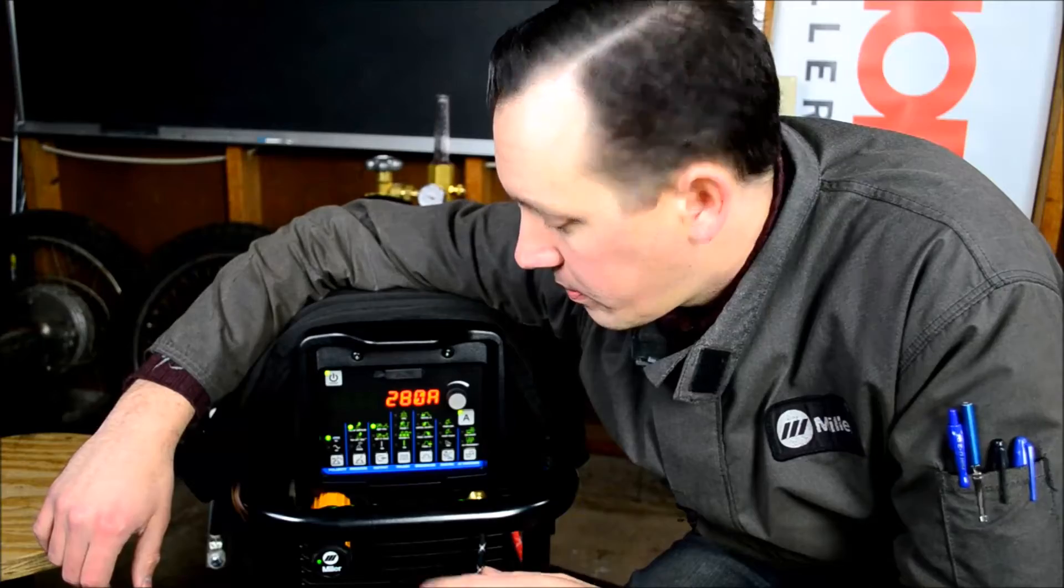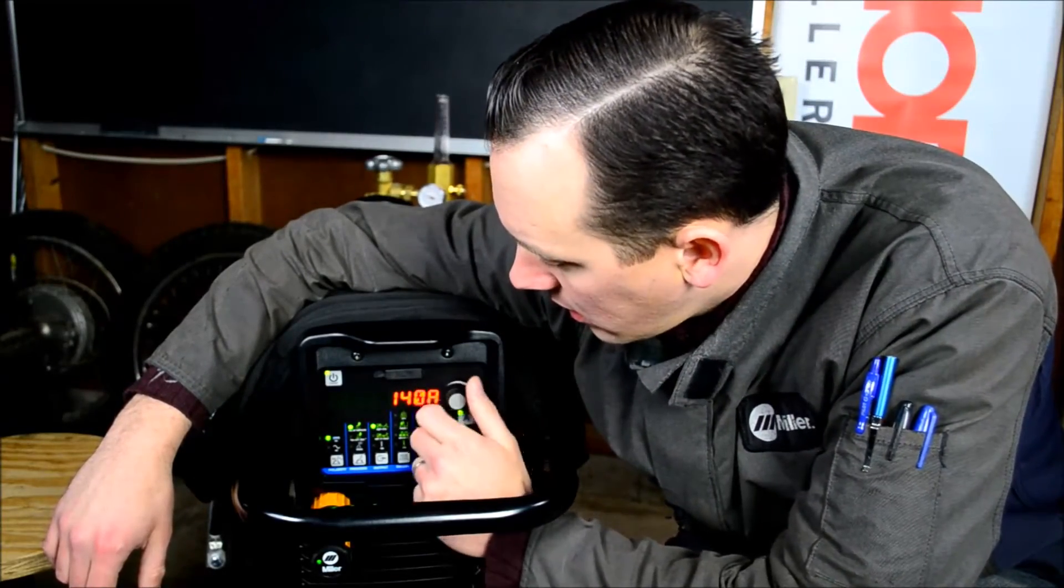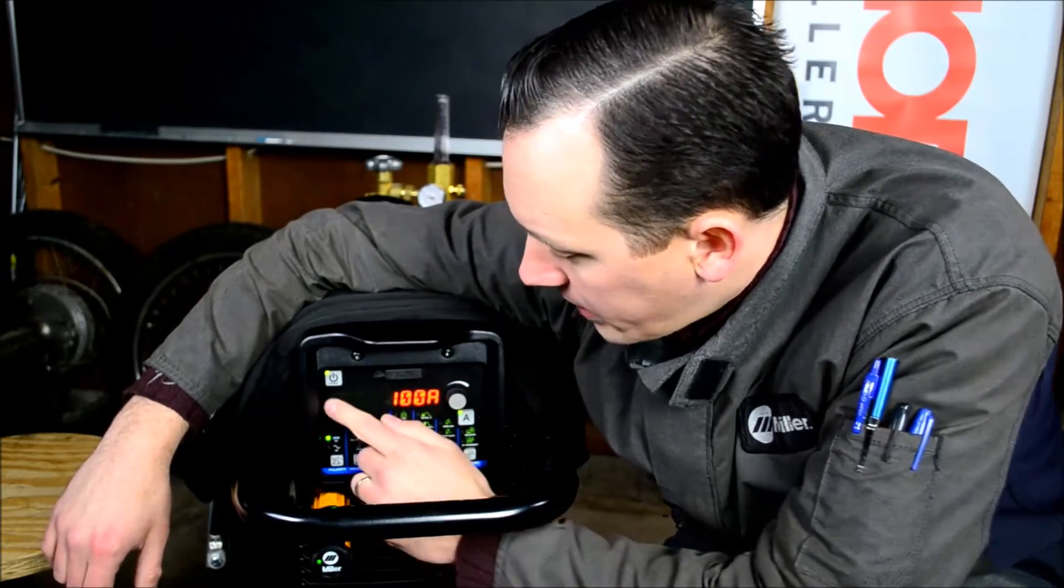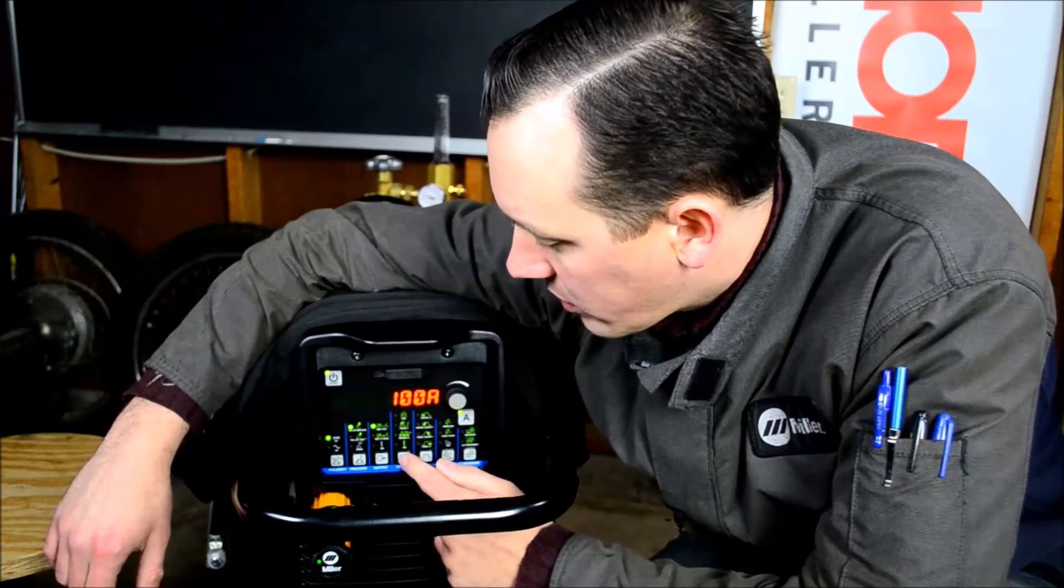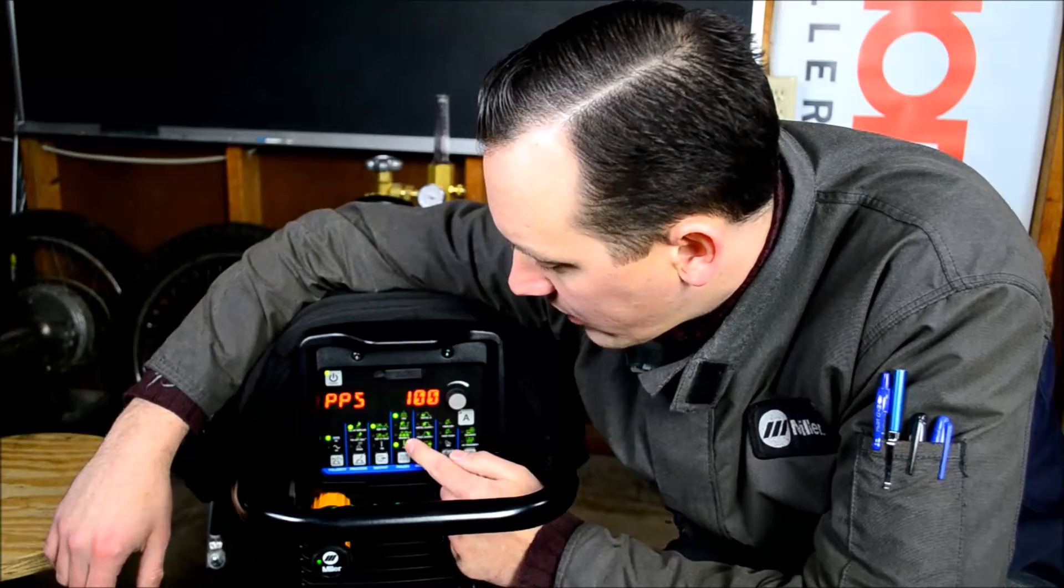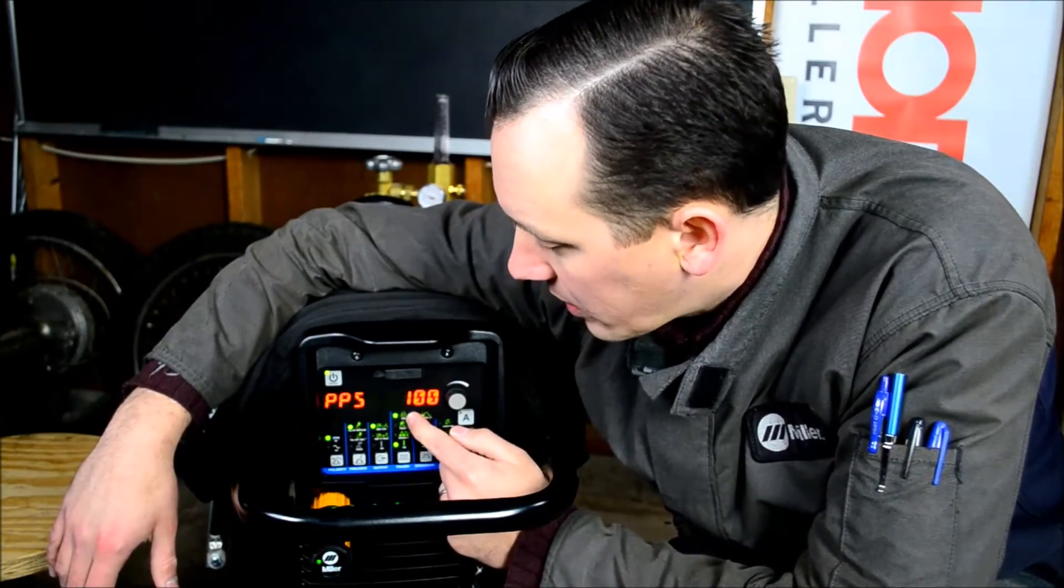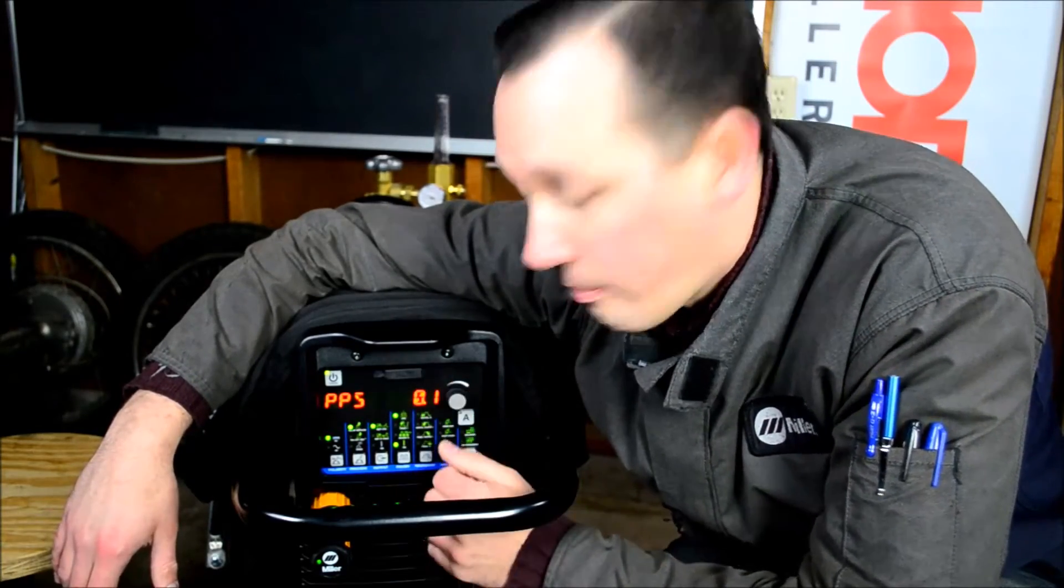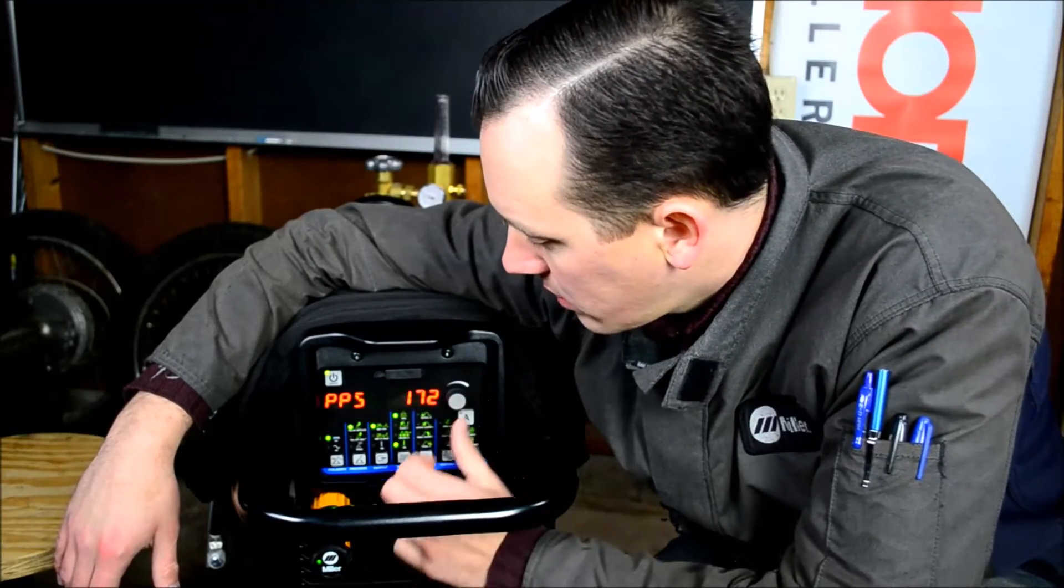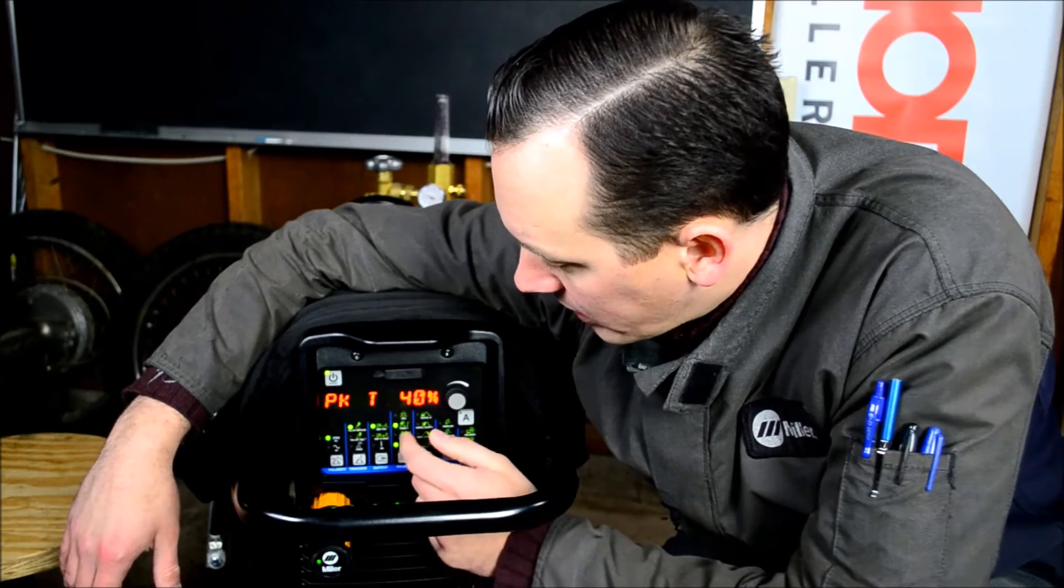So our four parameters in pulsing are going to be our peak amperage, our pulses per second, our peak time, and our background amperage. Our peak amperage is just going to be set on the panel right in the main interface. Now we press the pulser button, two things light up. Number one, we have on indicating that pulsing is enabled and it goes to our pulses per second. So this is our adjustment here. We can go anywhere from 0.1 up to 500 pulses per second, but we'll leave this at the factory preset of 100 for demonstration purposes.